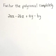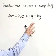Factor the polynomial completely: 2ax minus 2bx plus ay minus by.